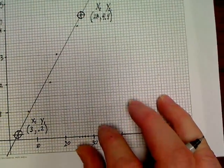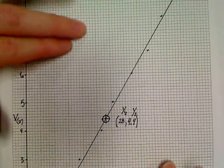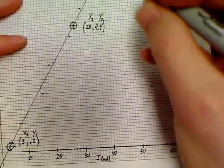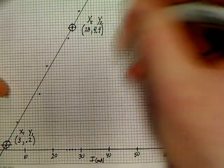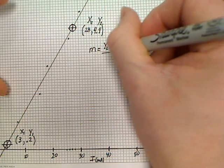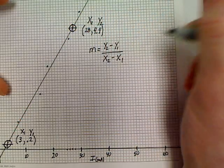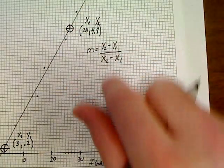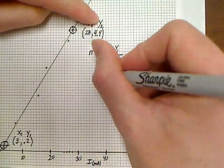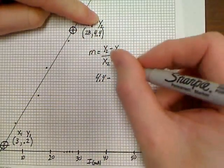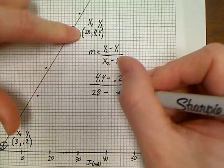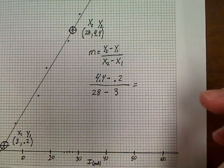Hopefully you've got those coordinates now. Somewhere on your graph, wherever you've got room, you need to do these calculations for slope. You're going to do the same calculation three times, but let's write the equation down once. M for slope equals change in y — y2 minus y1 — over x2 minus x1. For me, I'm going to have 4.4 minus 0.2 on top, divided by 28 minus 3 on the bottom.